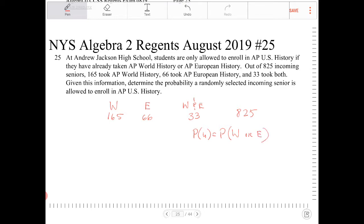that's because they will only allow students to take U.S. History if they have either taken World History or European History. So the probability of students taking U.S. History is equivalent to the probability of students who have taken World History or the probability of students who have taken European History.